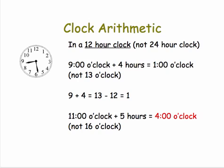11 o'clock plus 5 hours gives us 4 o'clock, not 16 o'clock. So we add 11 and 5 to get 16, but we take away 12 to give us 4.